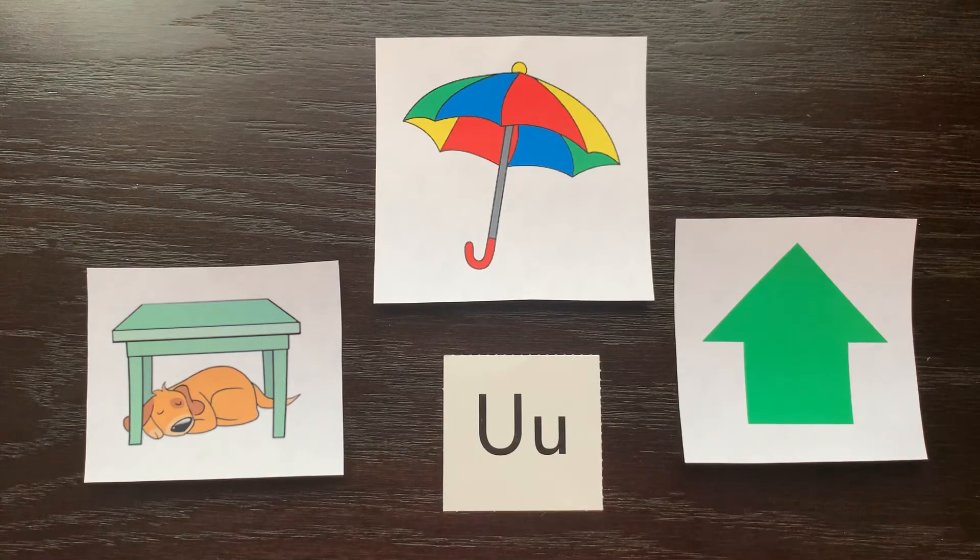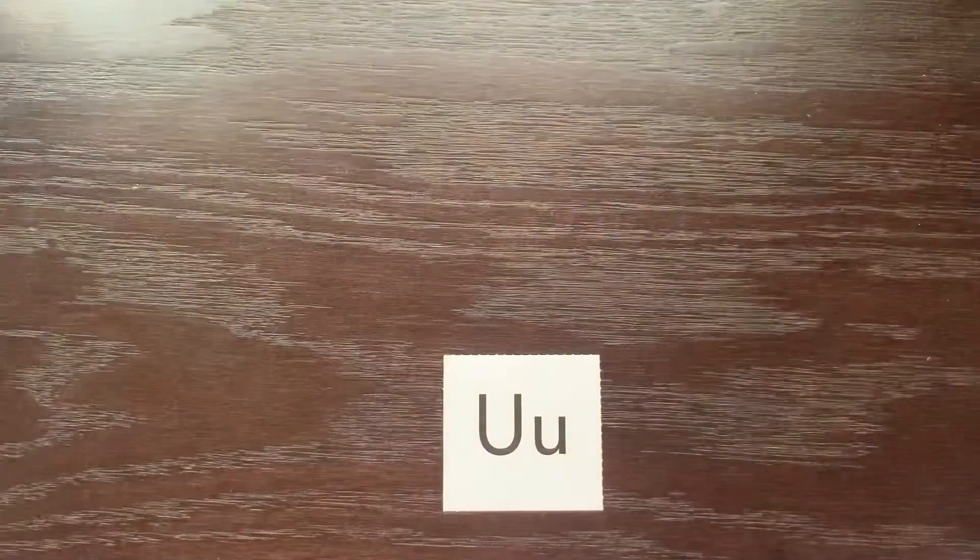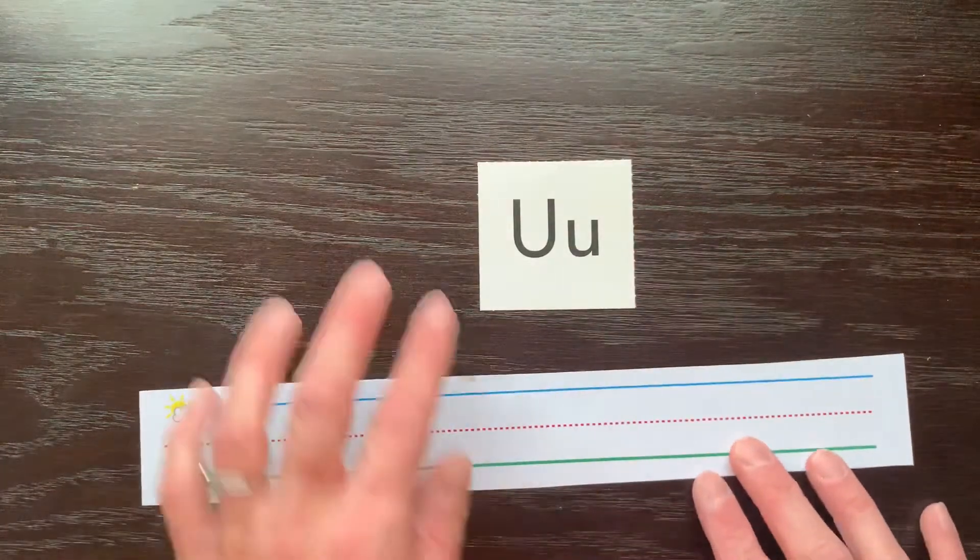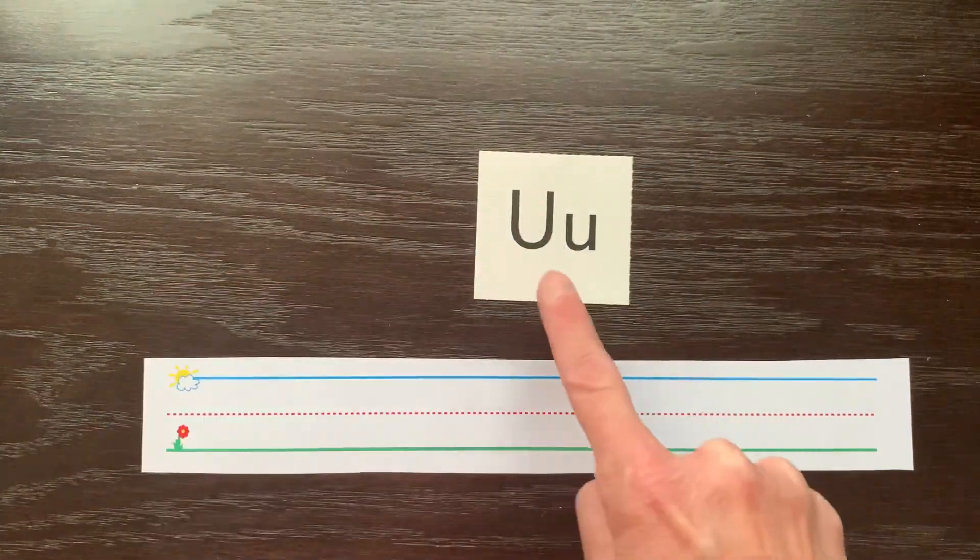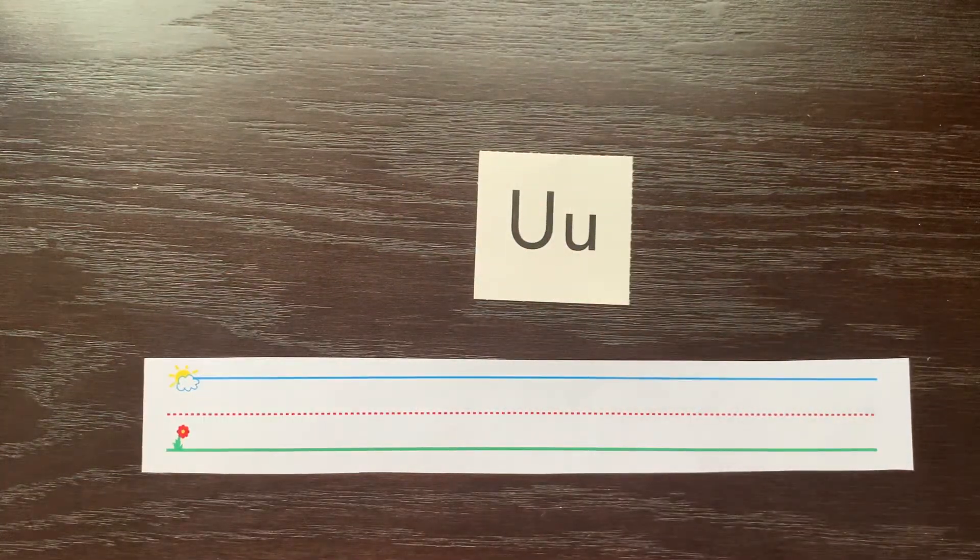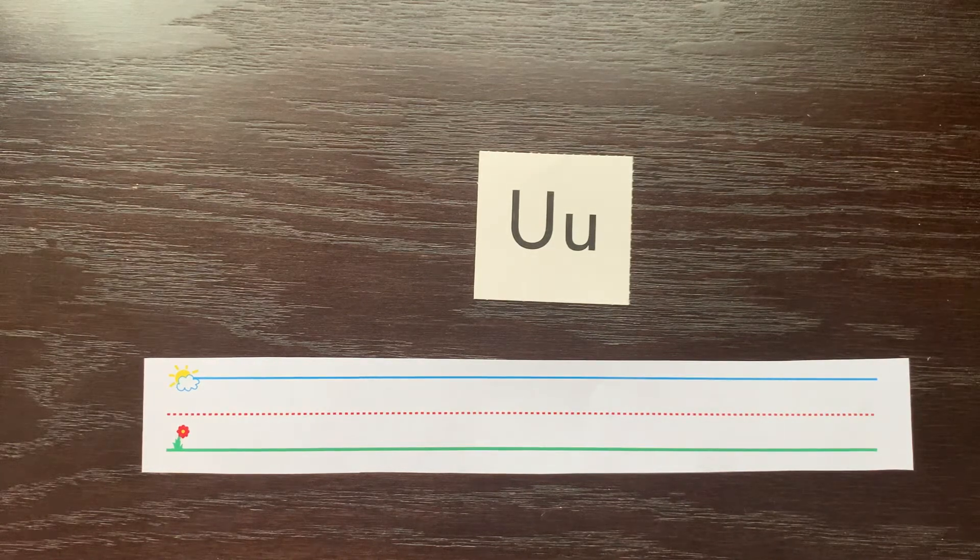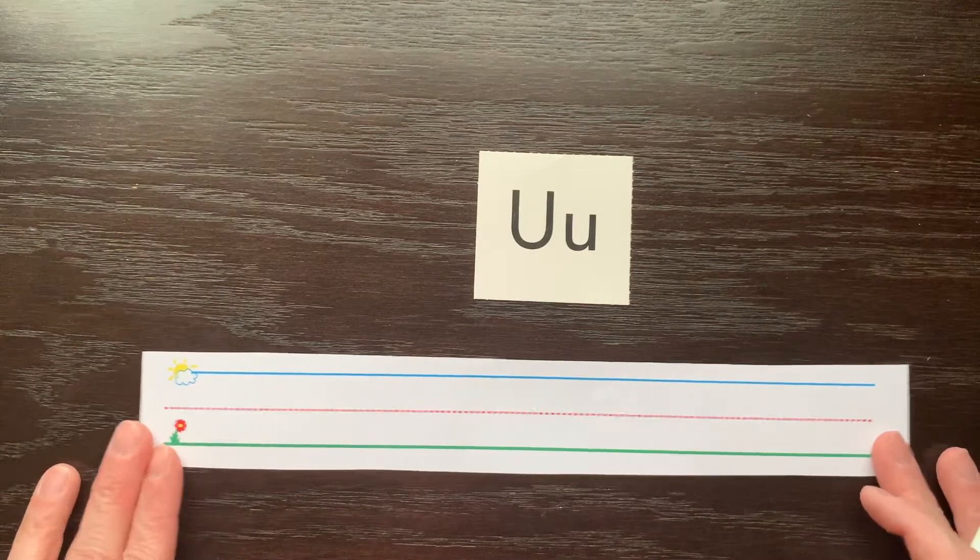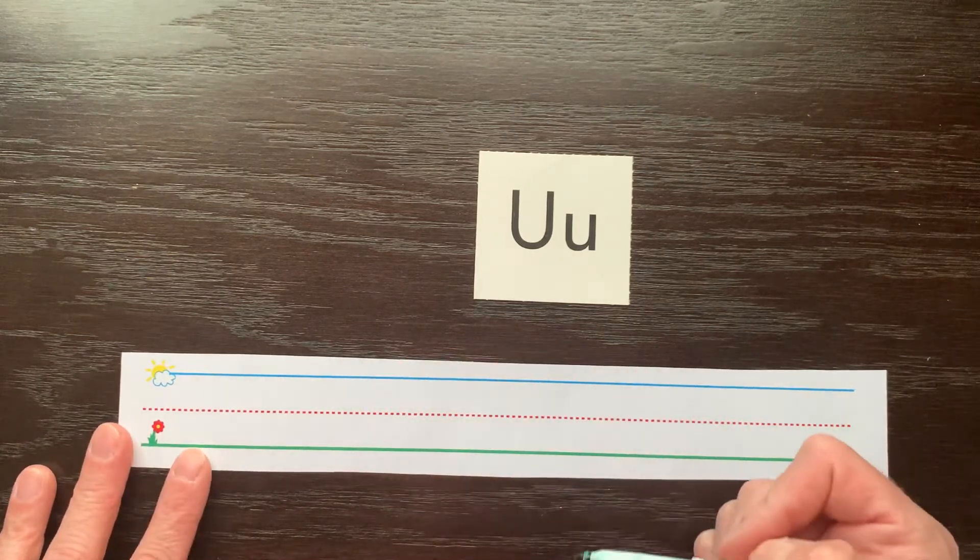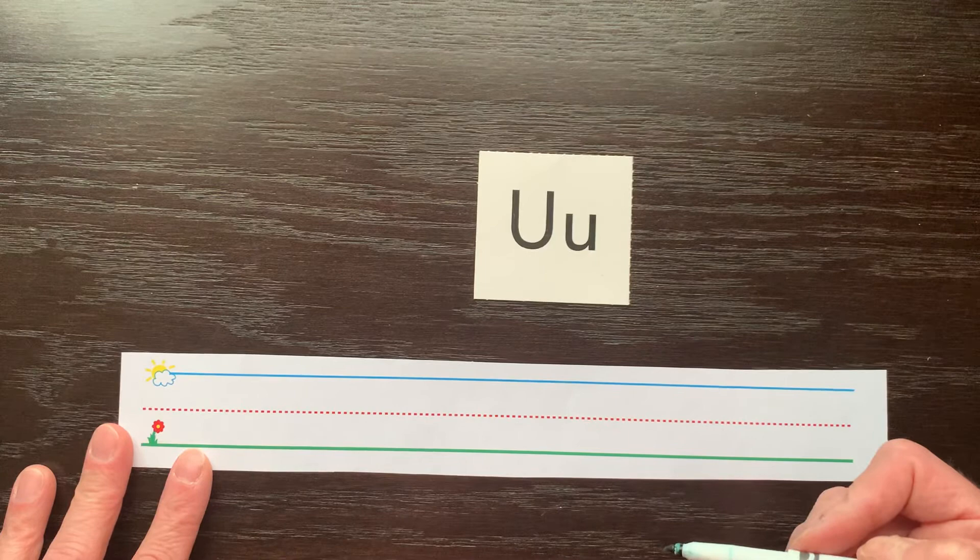All right, friends. Let's learn how to write the letter U. U is a curved letter, so we have to use curved lines when we're writing it. When we write a capital U, like all capital letters, we start at the top. That means the top line of our handwriting paper.